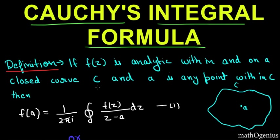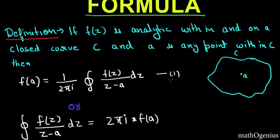So Cauchy integral formula tells us that if f(z) is analytic within and on a closed curve C and a is any point within C, then f(a) is equal to 1 over 2πi integration f(z) by z minus a dz.